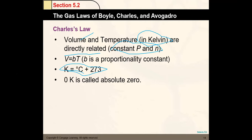Zero Kelvin is called absolute zero — the lowest temperature ever possible in nature. Liquid nitrogen is about −70°C (around 200 K), and liquid helium is around 50 K. Room temperature is about 297 Kelvin. All of these are far from absolute zero. The Kelvin scale is the absolute scale and will be covered more in thermochemistry.